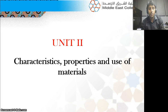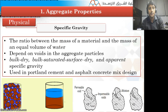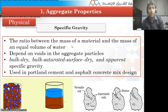Coming to characteristics, properties and use of materials. The first one is aggregate properties. In aggregate properties, we have physical properties. One of the main physical properties is specific gravity — the ratio between the mass of a material and the mass of an equal volume of water. The specific gravity depends on the voids in the aggregate particles.